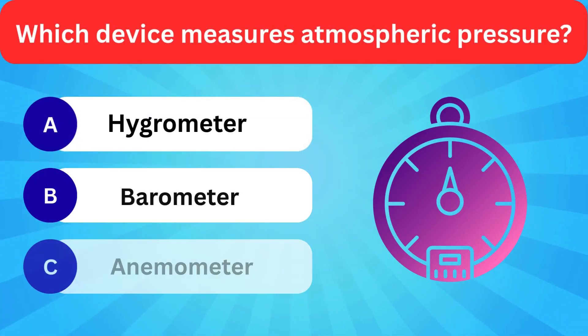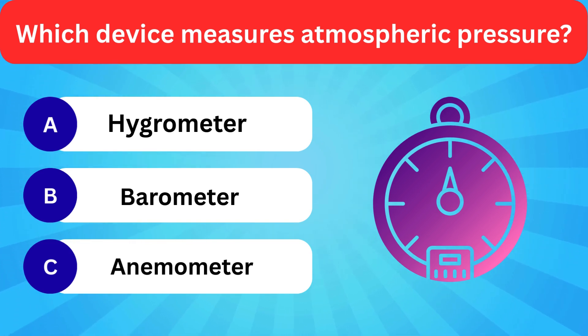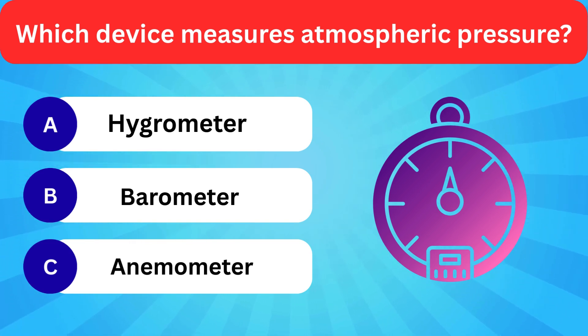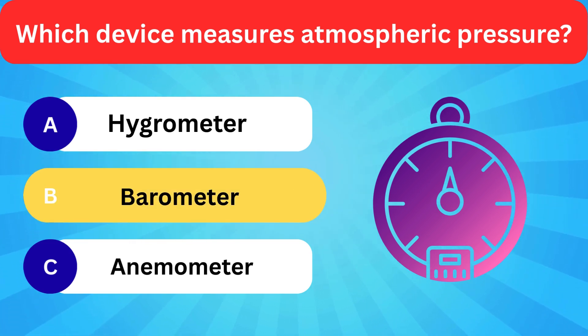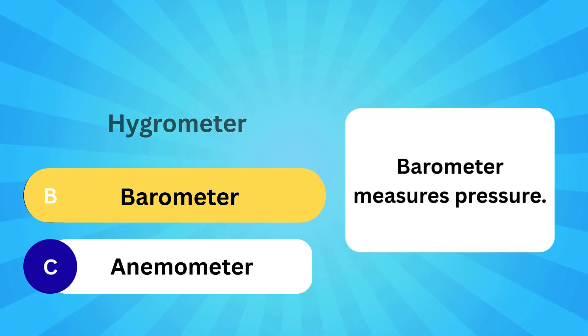Which device measures atmospheric pressure? Options: Hygrometer, Barometer, Anemometer. Correct answer is barometer. Barometer measures pressure.